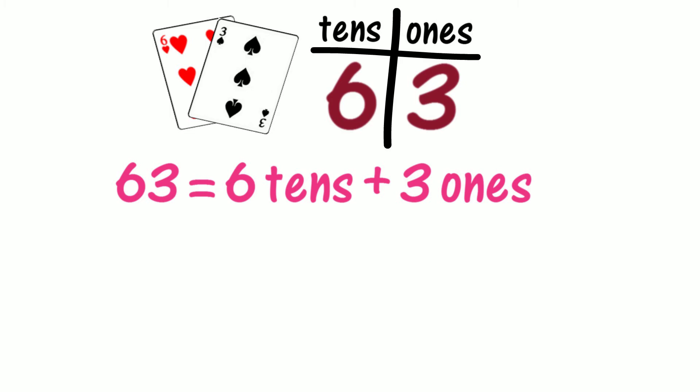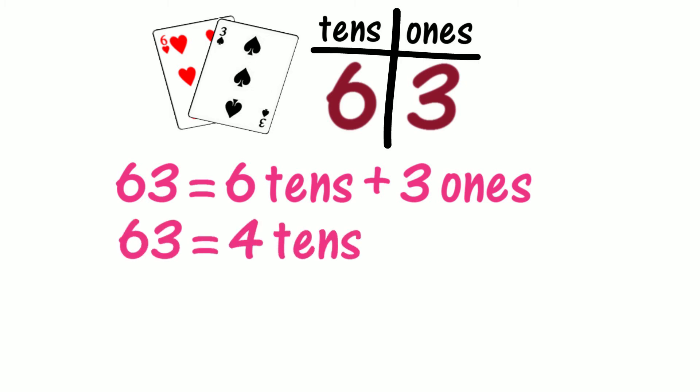Let's investigate how we can describe 63 using non-standard place value. Let's imagine that we only have four tens. How many ones will we have? If we see four tens as tens, that means we're seeing two tens as ones. Is two tens twenty ones? How many ones will we have if we have twenty ones plus the three ones? Will we have twenty-three ones? Could we describe 63 using non-standard place value as four tens and twenty-three ones?